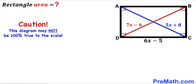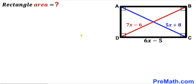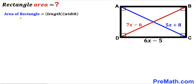Please keep in mind that this figure may not be 100% true to scale. Since we are interested in calculating the area of rectangle ABCD, let's recall the area of a rectangle formula: area is always equal to length times width.